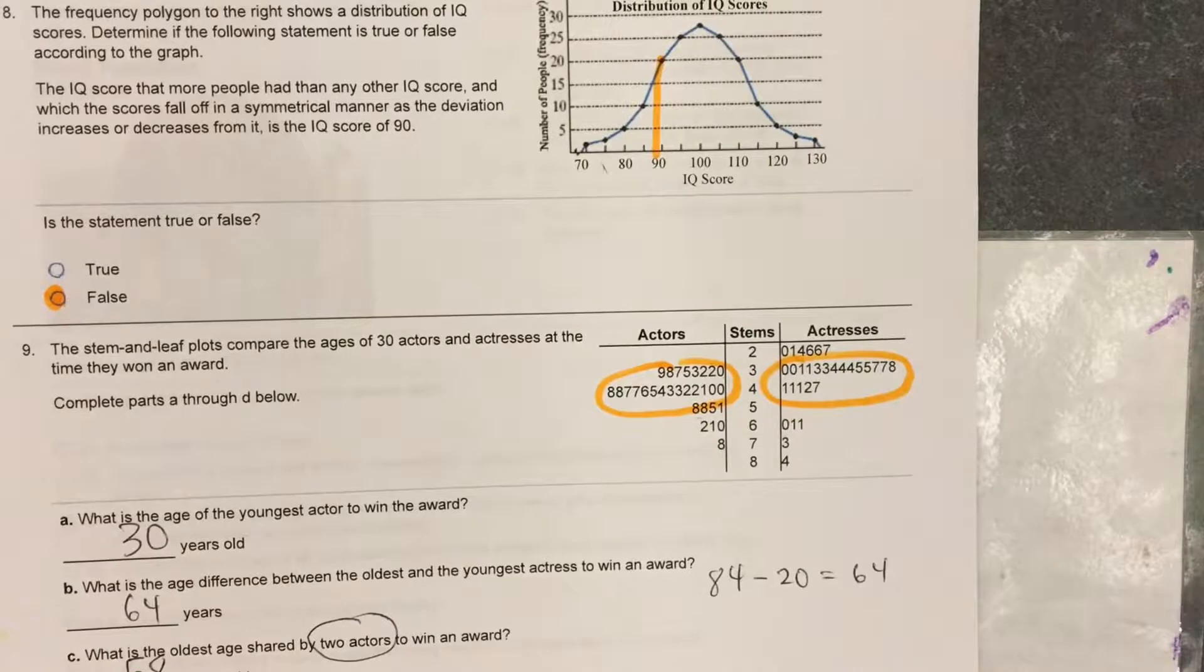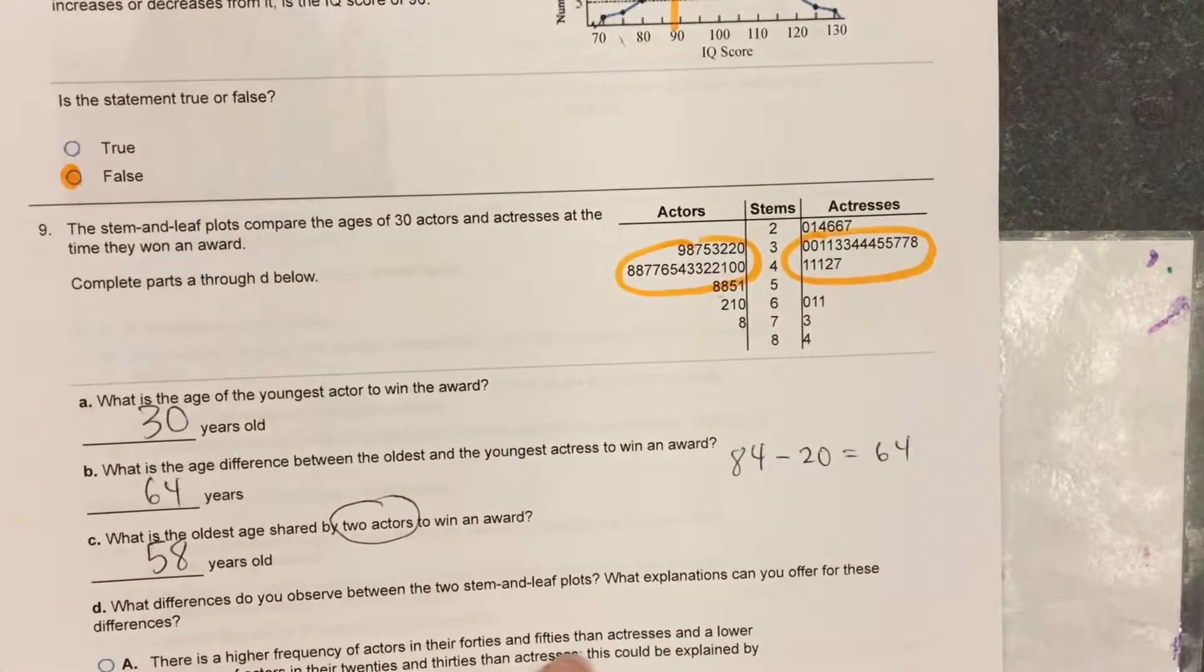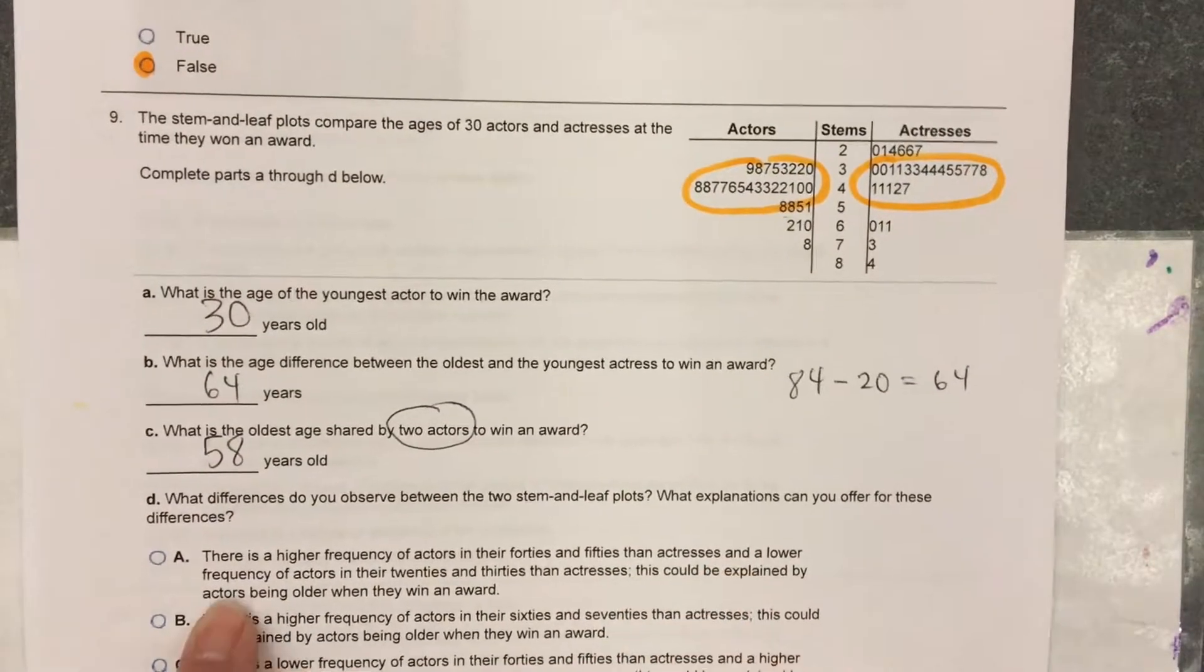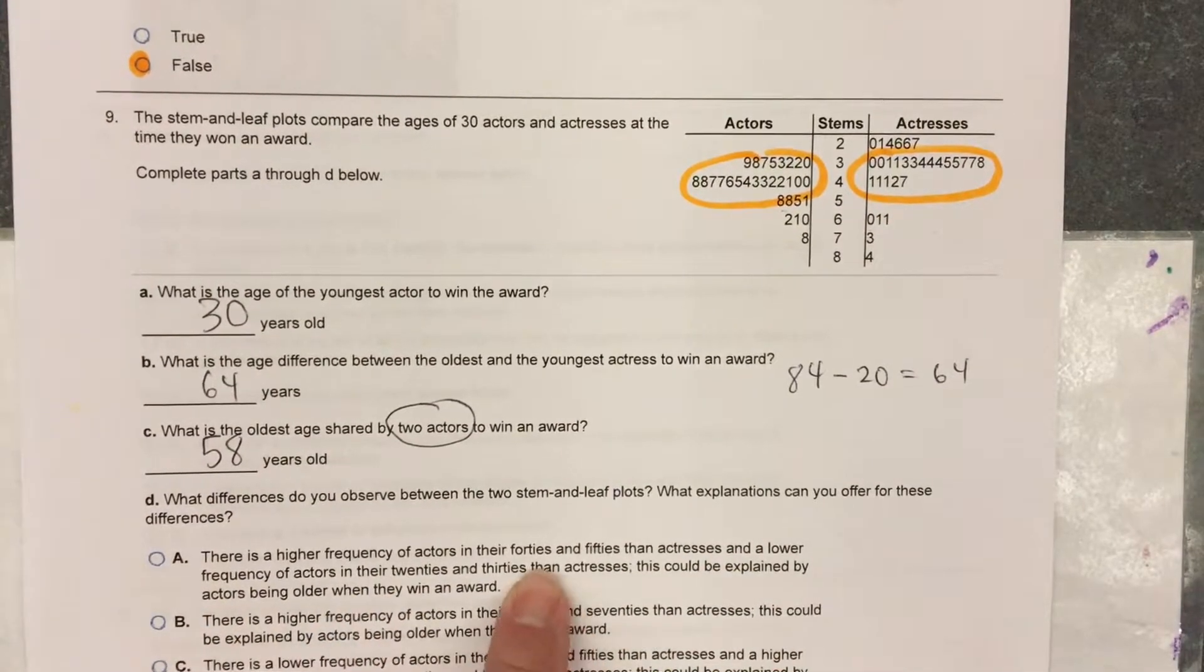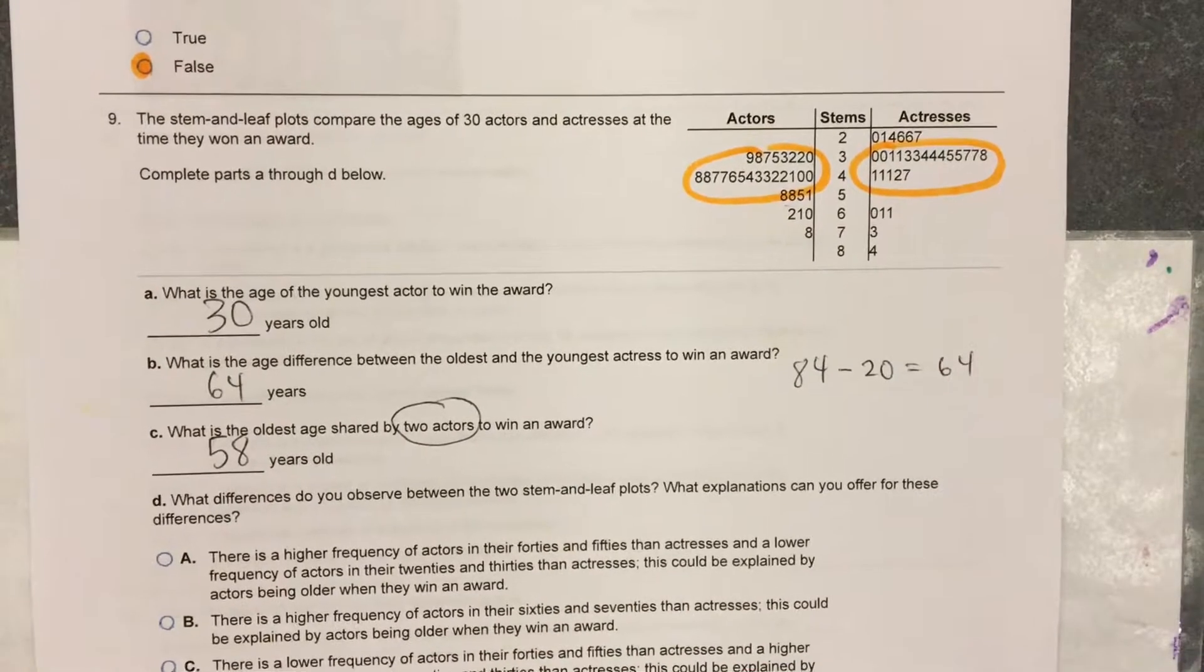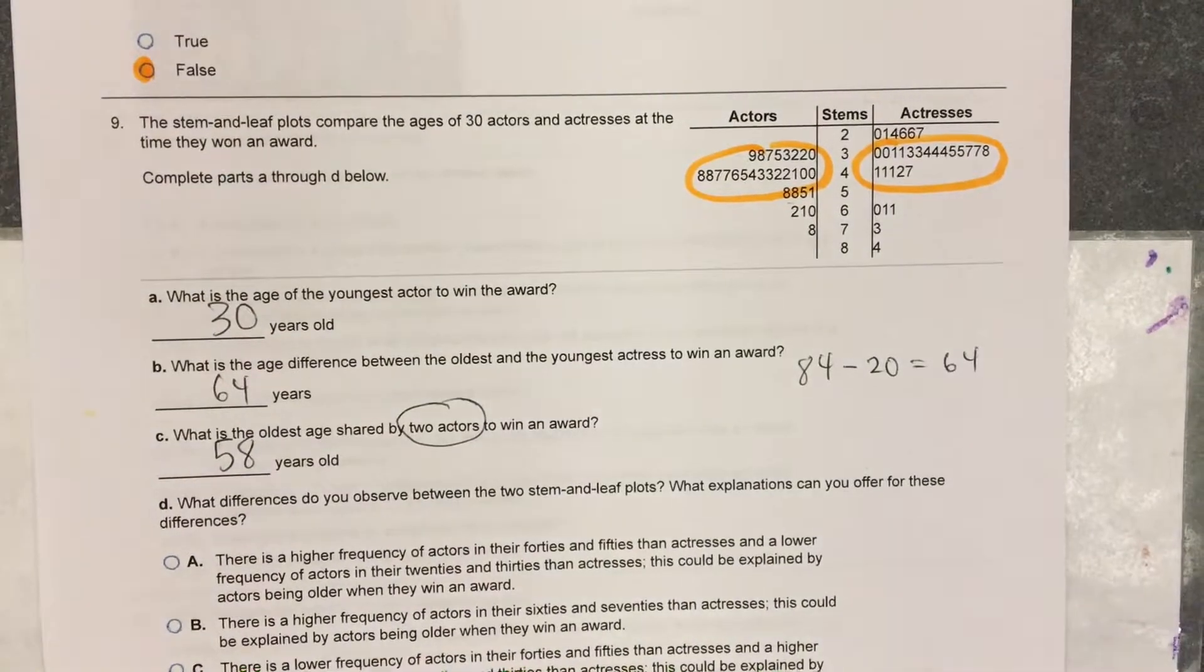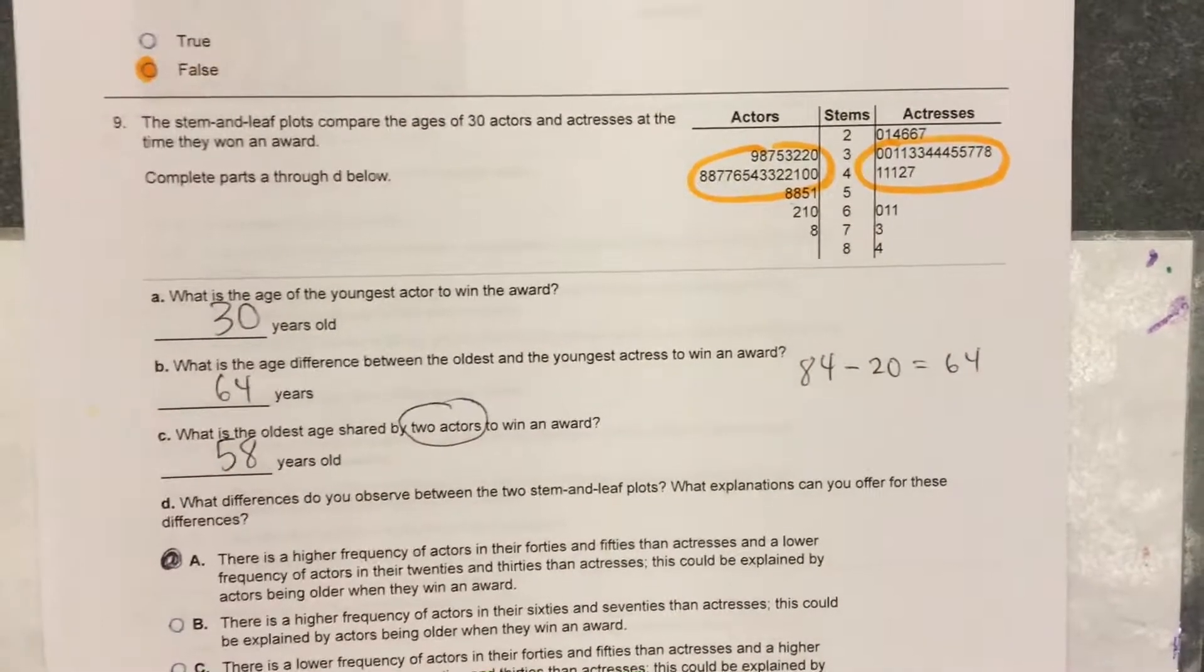Oh, they went 40s and 50s. There's a higher frequency of actors in their 40s and 50s than actresses and a lower frequency of actors in their 20s and 30s than actresses. That's true. This could be explained by actors being older when they win an award. That's the best choice.